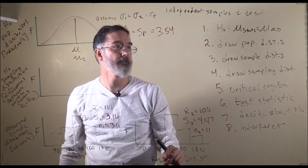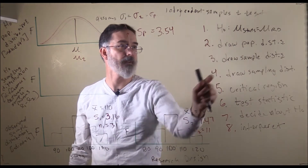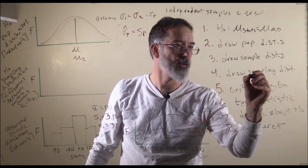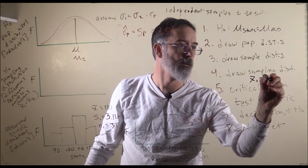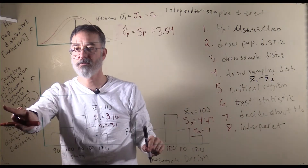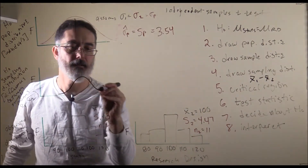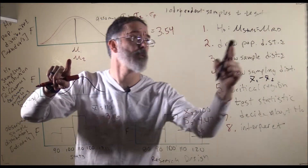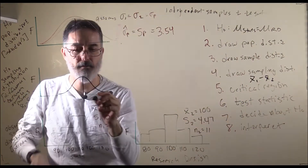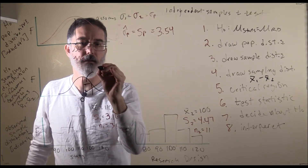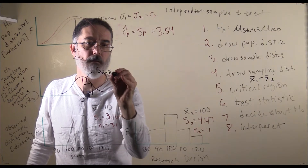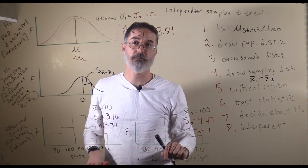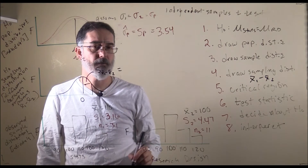Now we have our population distributions and sample distributions drawn, and we need to draw the sampling distributions we would expect. For the independent samples t-test, the sampling distribution is a distribution of differences between means. It is going to be a t-distribution, its mean is going to be the mean of one population minus the mean of the other, and according to the null hypothesis they are the same, so the mean is 0. The standard error is calculated a little differently now that we have unequal sample sizes.